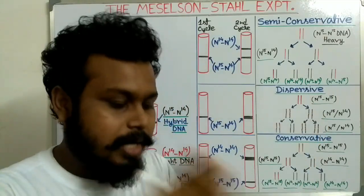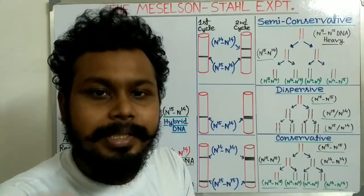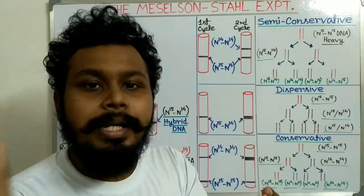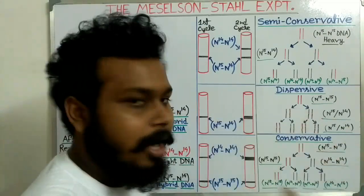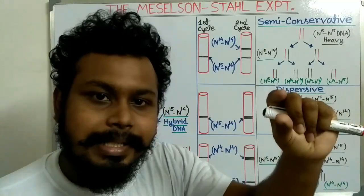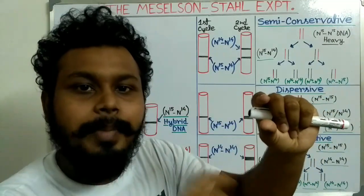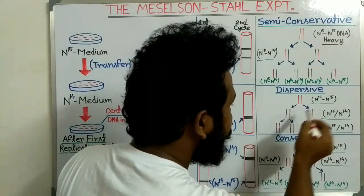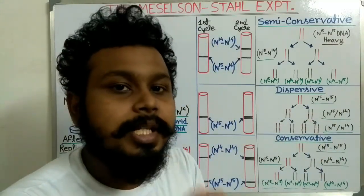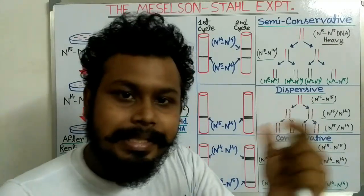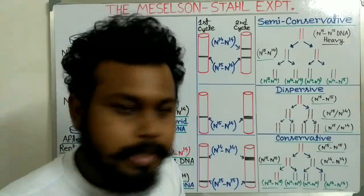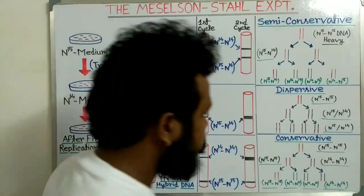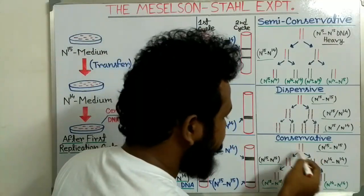In the dispersive model, the parental DNA strand is first cut into different segments, and then those segments are copied into new DNA molecules. After that, those parental DNA segments and the copied DNA segments are mixed with each other and ultimately make two DNA molecules which are a mixture of parental DNA segments and new DNA molecule segments.